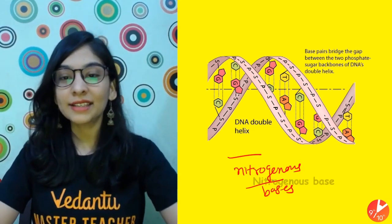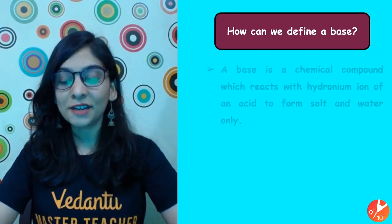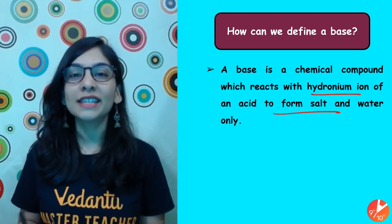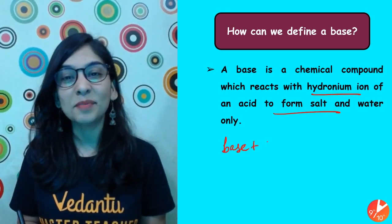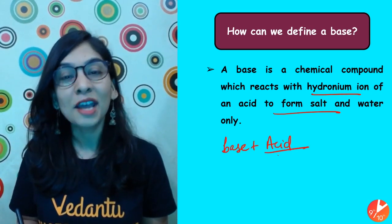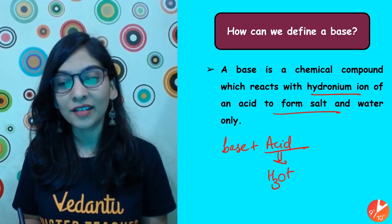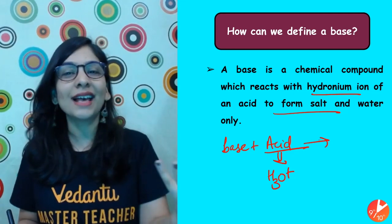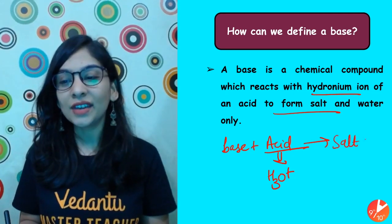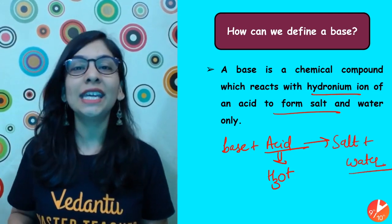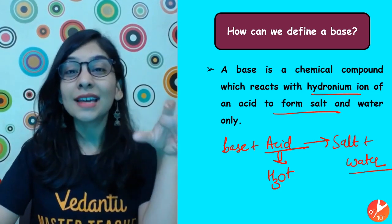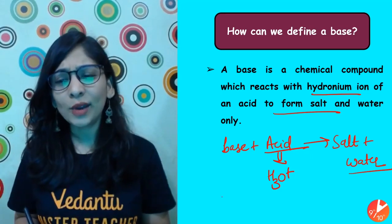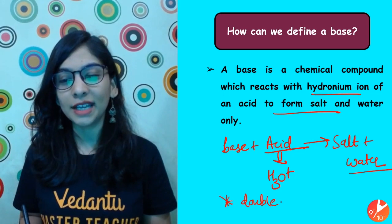Bases react with the acid because acids are the source of hydronium ion. When base combines with the hydronium ion — the main part of acid — you get salt and water. So bases are substances that react with the hydronium ion to produce salt and water. This is also an example of double displacement reaction because they exchange their ions.